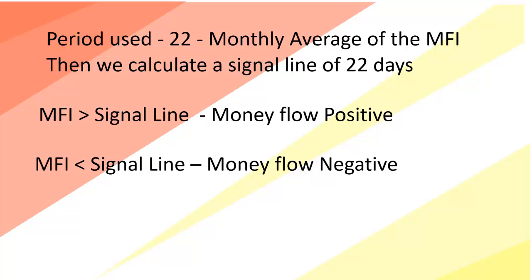Here we are using a period of 22, that is a monthly average, for calculation of the MFI. Then we calculate a signal line which is also an average of 22 days. If the MFI is greater than the signal line, the money flow is positive. And if the MFI is less than the signal line, the money flow is negative.